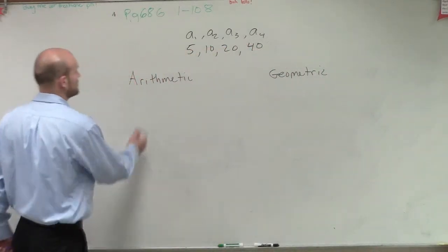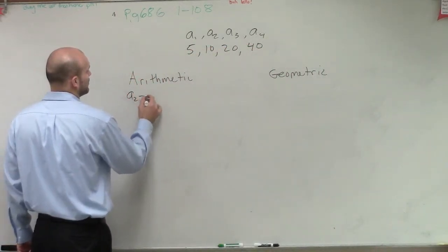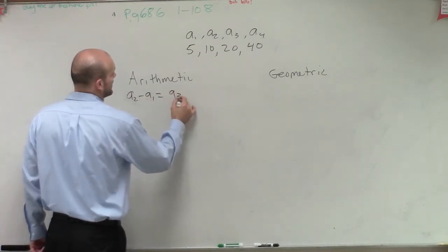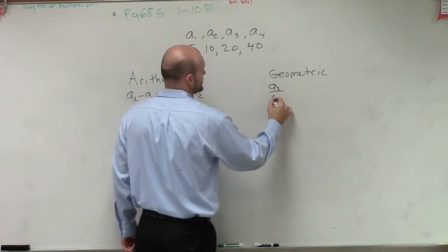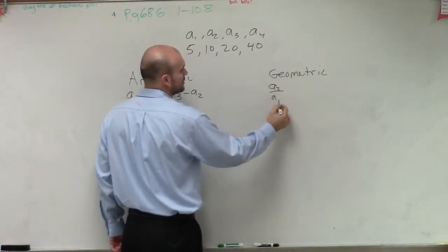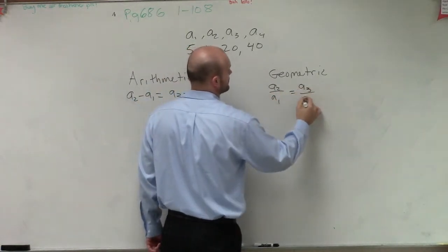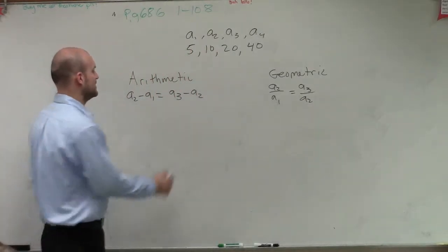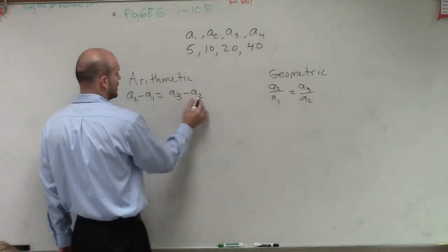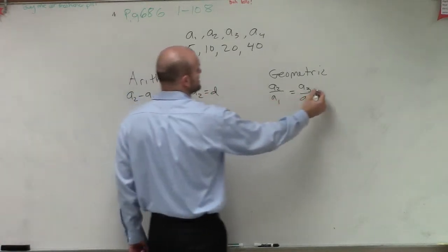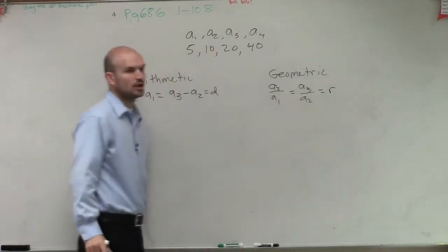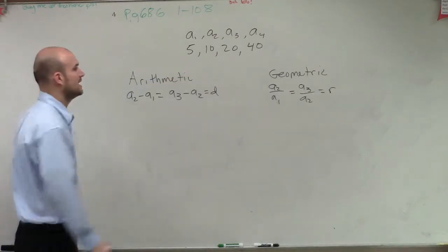Let's see if these have a common difference. For arithmetic, we do a2 minus a1 has to equal a3 minus a2. For geometric, we divide two consecutive terms. This equals what we call d, the difference, and this has to equal a common ratio, which we call r.